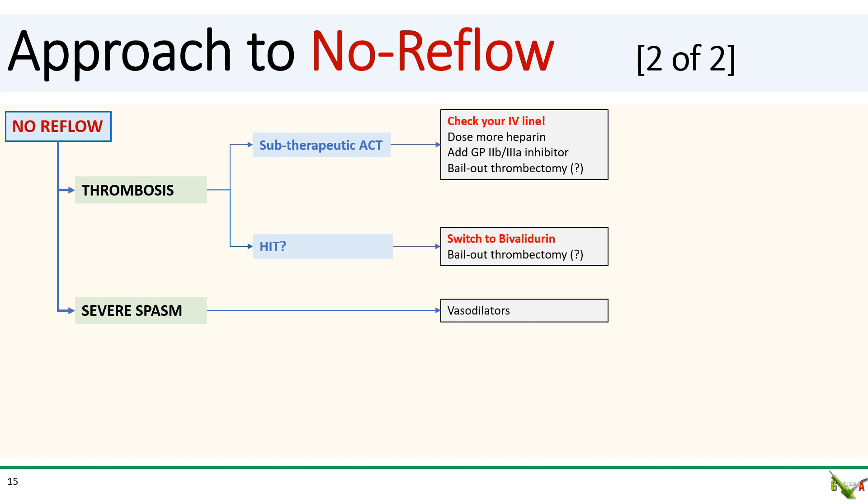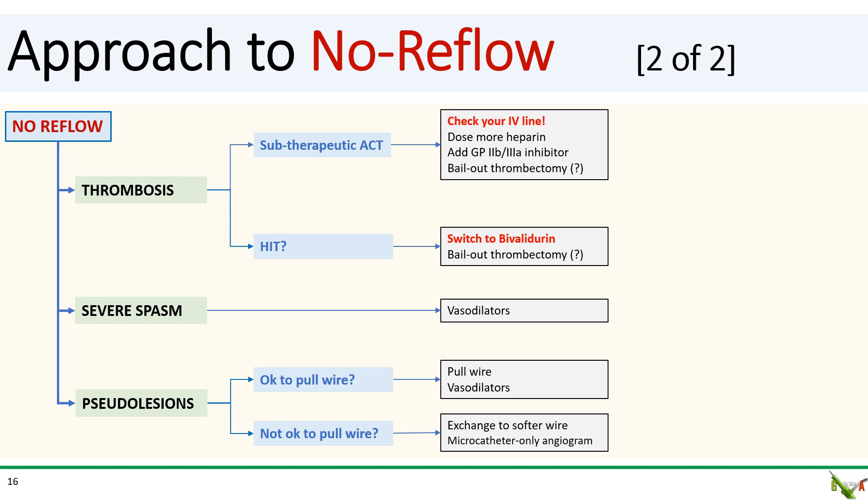Severe coronary spasm can cause the appearance of no reflow, and you treat that with vasodilators. Finally, pseudo-lesions due to vessel straightening by your wire can cause no reflow in especially tortuous vessels. If it's okay to pull the wire, just pull it, give vasodilators, and reassess. If you cannot pull the wire, exchange it to a softer wire such as a Sion 0.03. Alternatively, you can exchange your wire to just a microcatheter such as a FineCross and reassess, since the body of a microcatheter is often more flexible and less likely to cause pseudo-lesions.